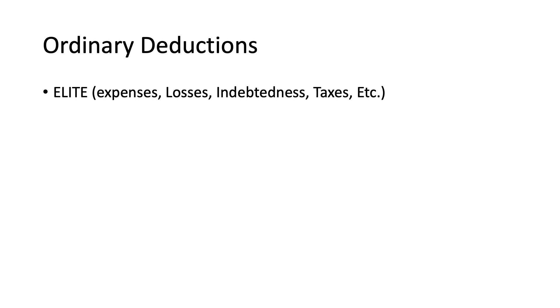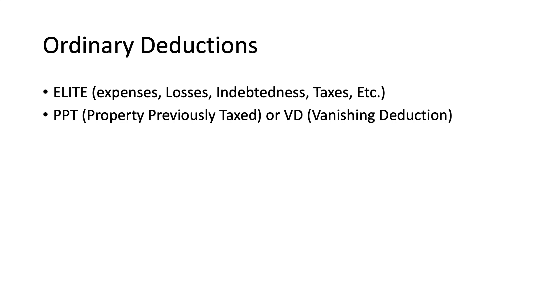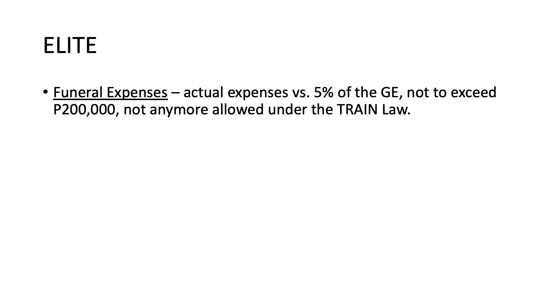Ordinary deductions are the ELITE deductions: Expenses, Losses, Indebtedness, Taxes, etc.; property previously taxed (PPT), also formerly called vanishing deduction; and transfer for public use. Let's go through them one by one. The first expense is funeral expense — you may deduct from the gross estate the actual funeral expenses or 5% of the gross estate.